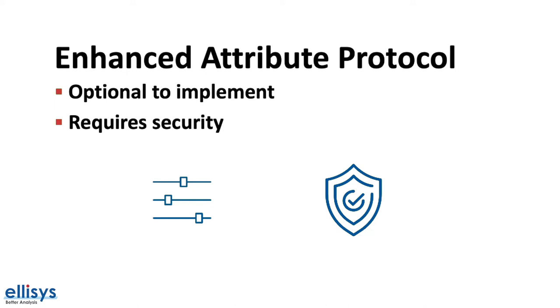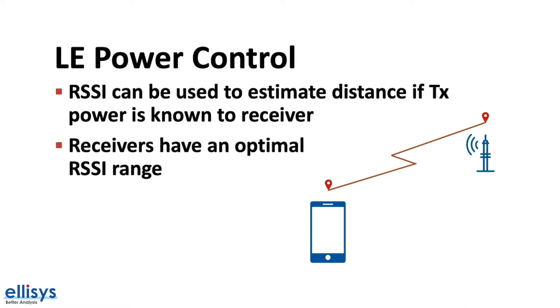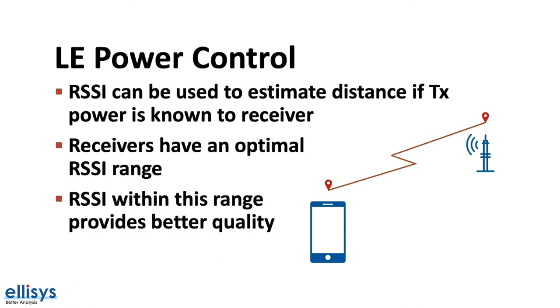The next new feature is called LE power control. In wireless communication, the received signal strength indicator or RSSI can be used to estimate the distance of the receiver from a transmitter if the original transmit power is known to the receiver. Wireless receivers have an optimal received signal strength range. Higher or lower than this range may cause issues with decoding the received signal, so the RSSI within this range provides better signal quality.